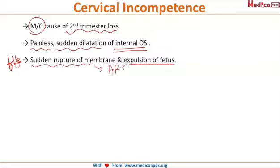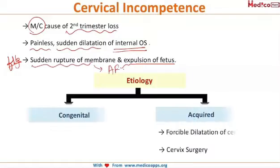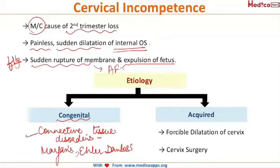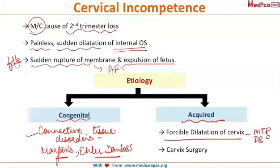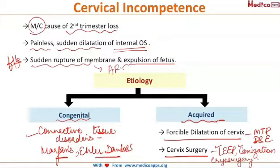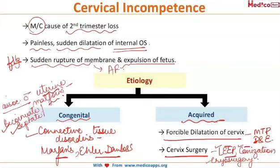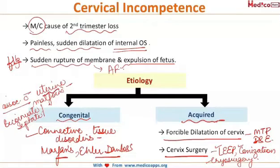Talking about the etiology of cervical incompetence, causes can be either congenital — such as congenital weakness of the cervix due to connective tissue disorders like Marfan syndrome or Ehlers-Danlos syndrome — or acquired. The more common acquired causes include forcible dilatation of the cervix as seen in MTP or D&E done by inexperienced surgeons, cervical surgeries like LEEP, conization, or cryosurgery. Among all these, cryosurgery carries the minimal risk. It can also be associated with uterine malformations such as bicornuate or septate uterus.